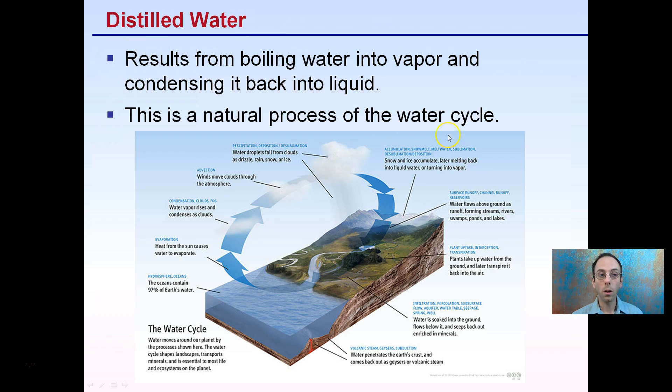The distillation of water results from boiling water into vapor and condensing it back into a liquid. However, this boiling doesn't necessarily need to always occur. We can simply evaporate water and condense it into clouds, then have it rain, and then it gets into our rivers, streams, and lakes, and then it gets evaporated again. This is a natural process of the water cycle.